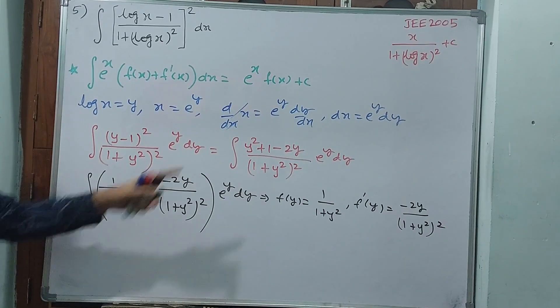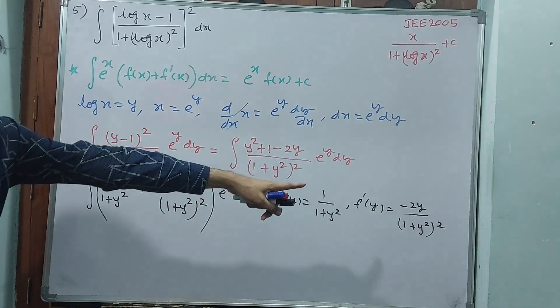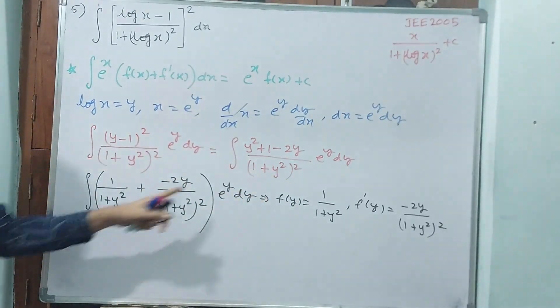f of x is 1 by x, minus 1 by x square. But again 2y is there in denominator. Is this the same formula?